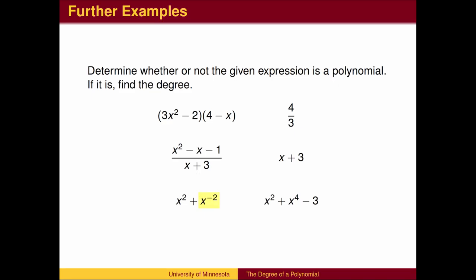Negative exponents mean reciprocals. x to the negative second is 1 over x squared. Again, this division means that the expression is not a polynomial.